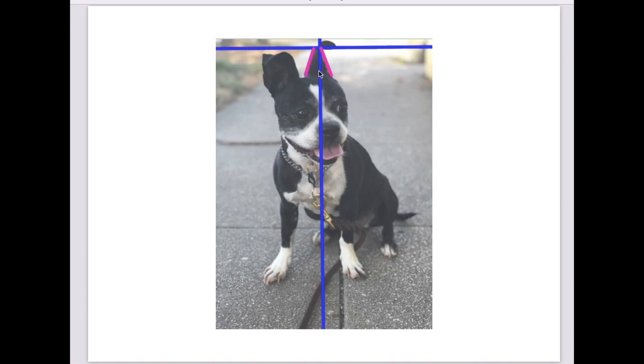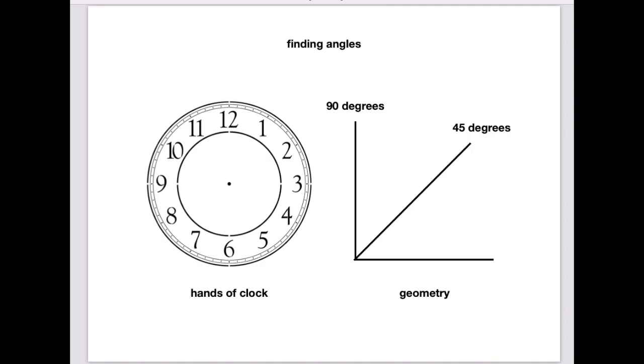find all of her angles, right? So the angle of her ears would be about what, like 1 o'clock and 11 o'clock on her ears, right?